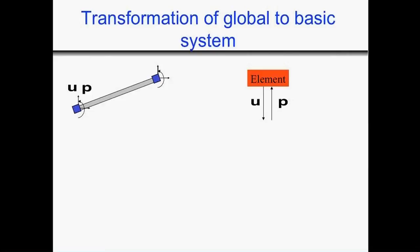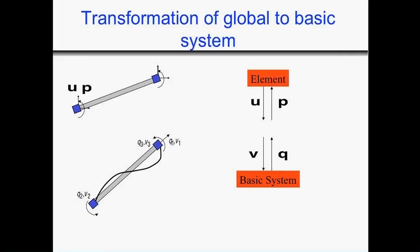If you look at one element, you'll see that it has six degrees of freedom in the global system. However, for the architecture of OpenSees, it's easier to develop element state determination in the basic system, which means instead of six degrees of freedom in the global system, we have only three degrees of freedom designated with the letter V, representing axial deformation and rotations at the element ends. Similarly, we have three basic forces Q1, Q2, and Q3, which are axial force and two bending moments at the column ends.